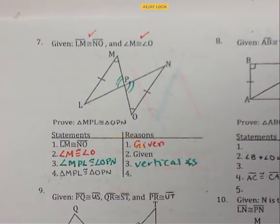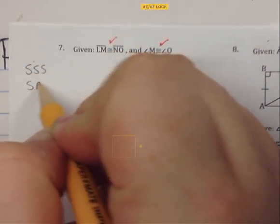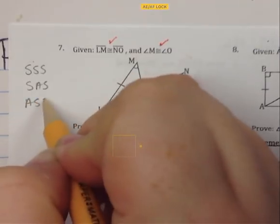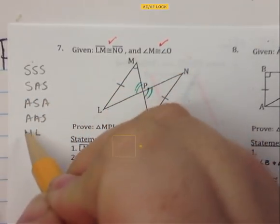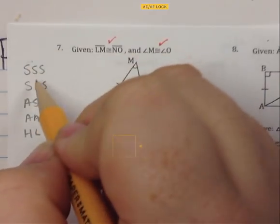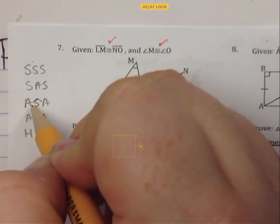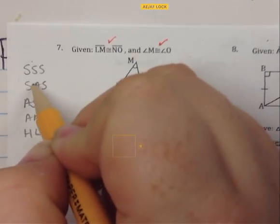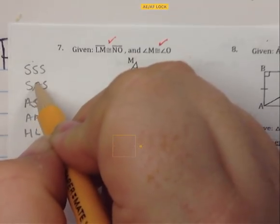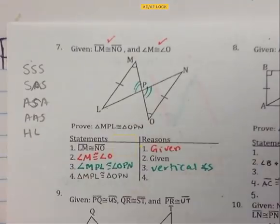The ways to prove triangles are congruent: side-side-side, side-angle-side, angle-side-angle, angle-angle-side, and HL — HL specifically for right triangles. For angle-side-angle, the side is touching both of the angles. For side-angle-side, the angle is touching both of the sides. So you've got to see that they actually touch both.